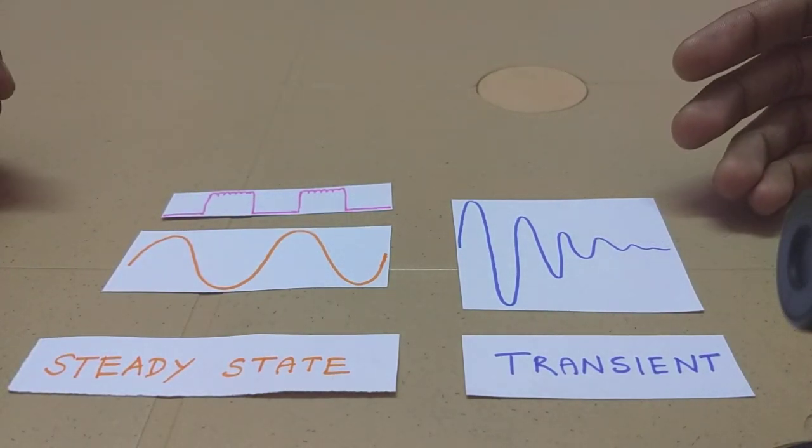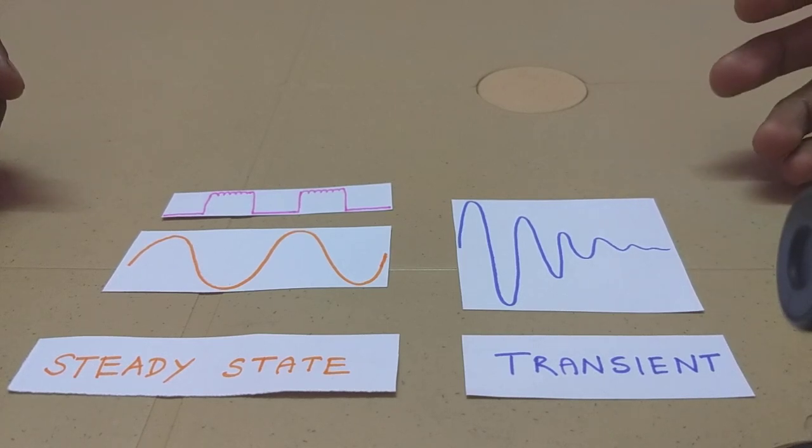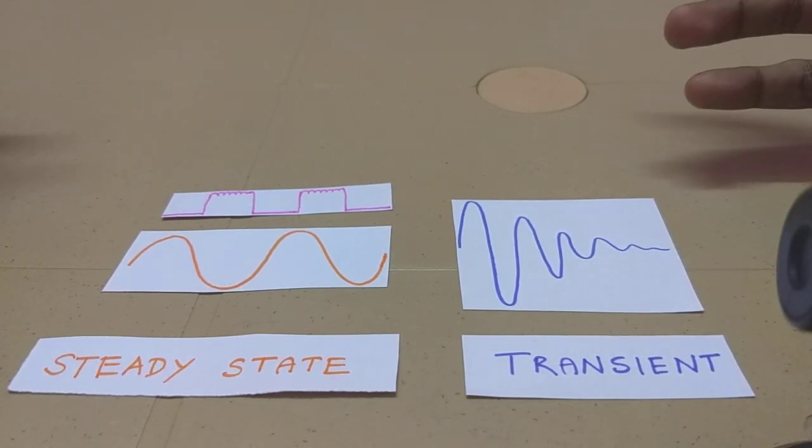Now a transient signal, on the other hand, are infinite sum of sine waves. So they comprise of a lot of sine waves.